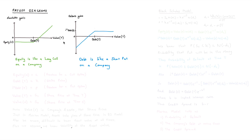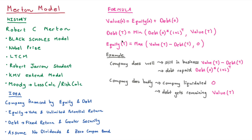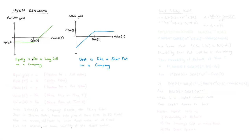Looking at the debt payoff — which is the minimum of the current debt times the interest or the future value of the company — the payoff diagram shows that debt behaves very much like a short put on the company.